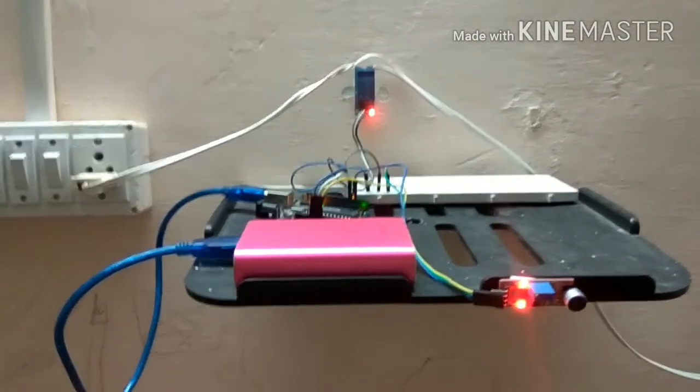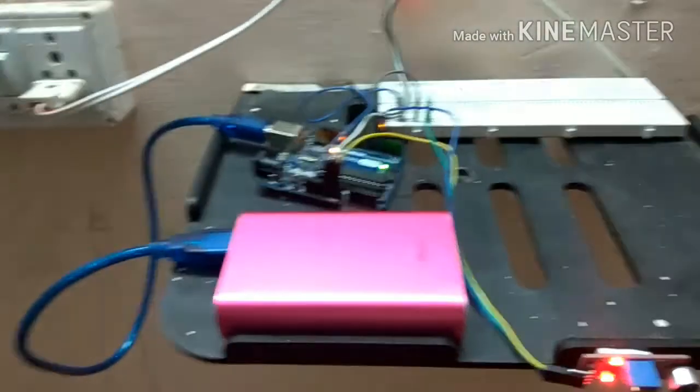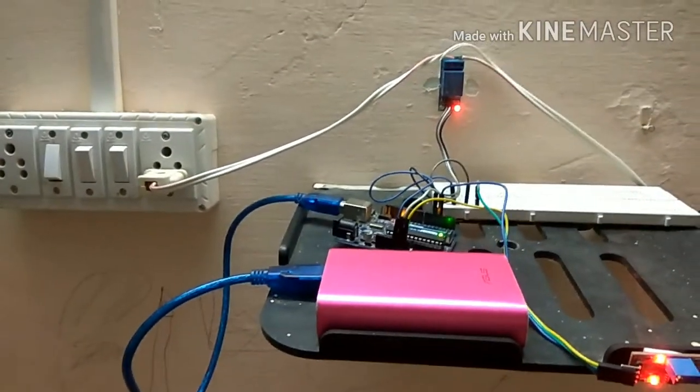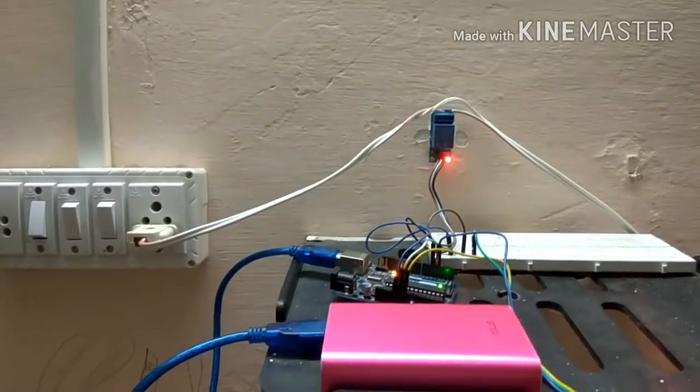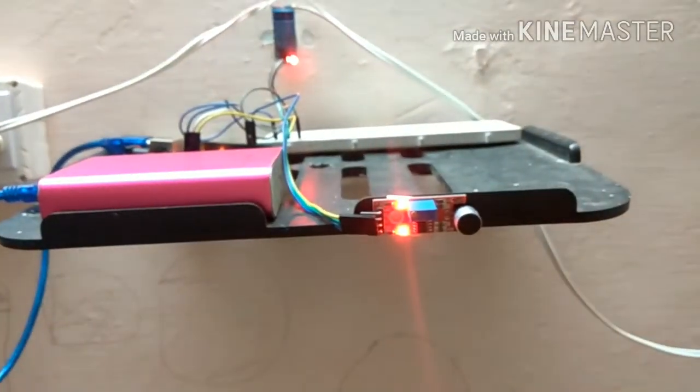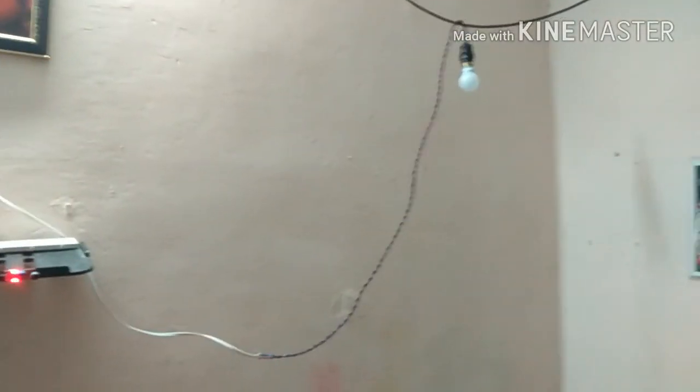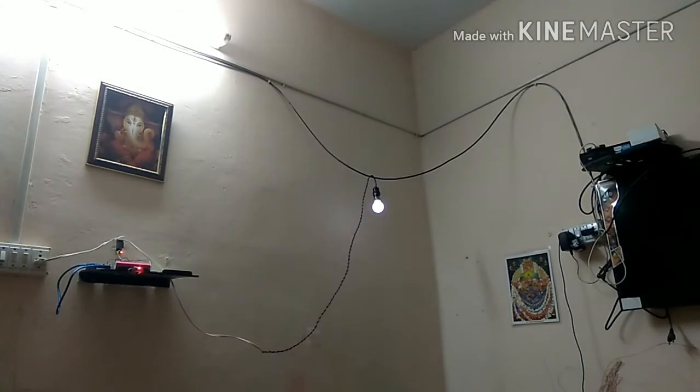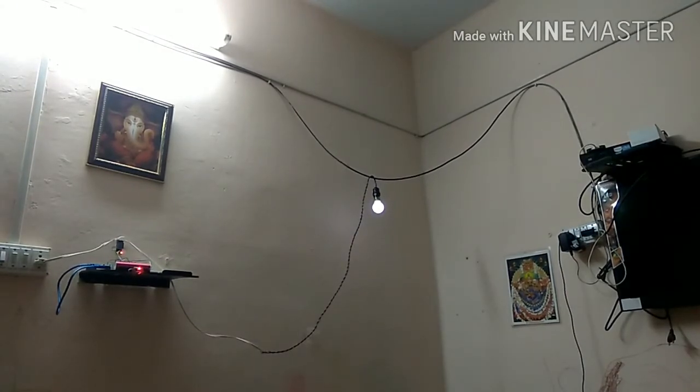So here I have put my setup and I have given power supply to my Arduino through a mini power bank. And I have connected my relay to the wall socket and connected my sound sensor over there. And in the outlet section I have connected an LED. As you can see, the light is turned on.